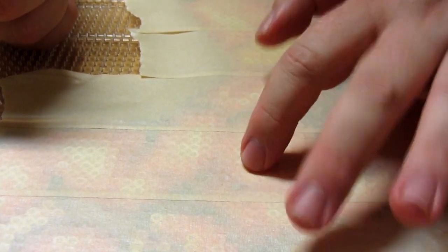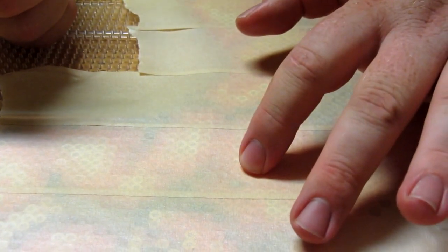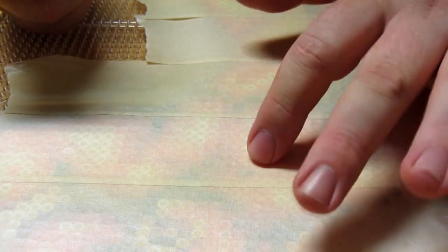It is making little air pocket bubbles. When you start to iron it down those things will not seal. We'll get some examples of how bad it looks if you don't do this thing.